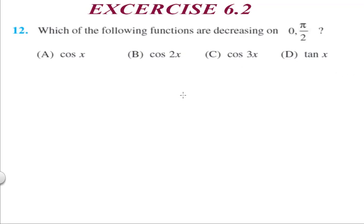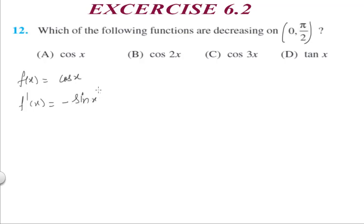Question 12: Which of the following functions are decreasing on (0, π/2)? Part (a): f(x) = cos(x). Differentiating, f'(x) = -sin(x). Between 0 and π/2, sin(x) is positive, but the negative sign makes f'(x) < 0. Hence cos(x) is decreasing on this interval.